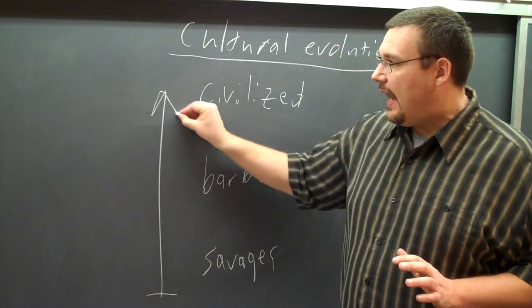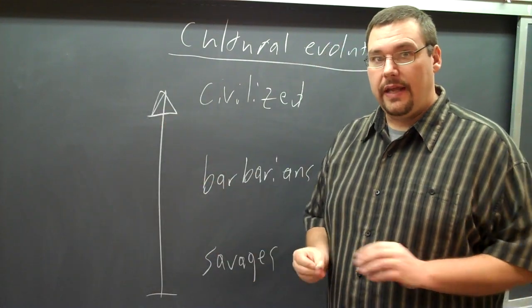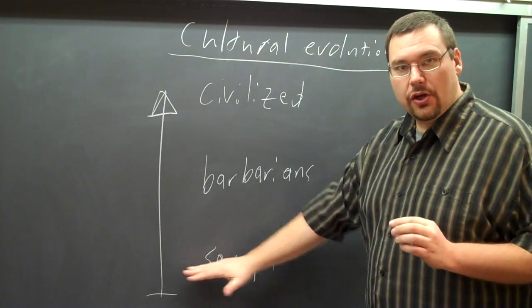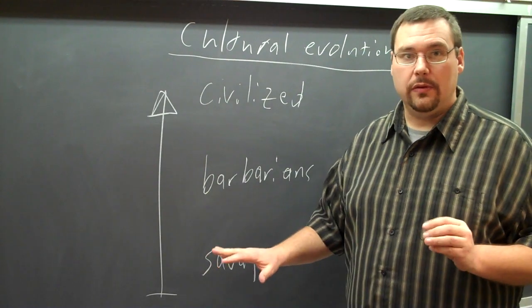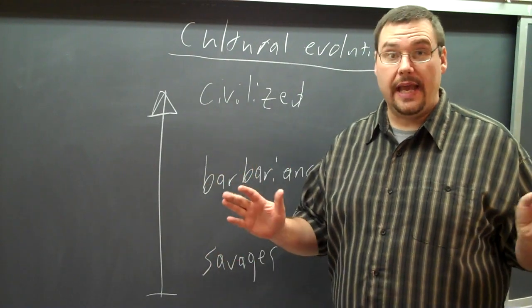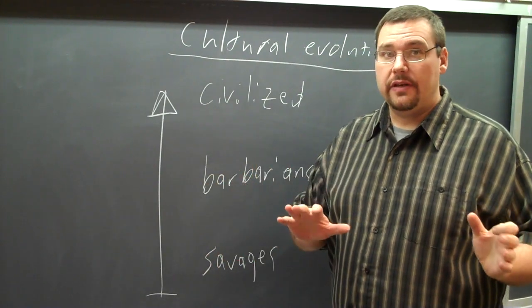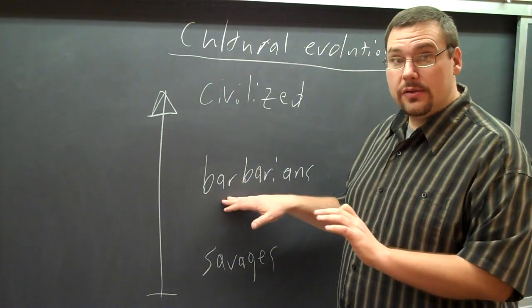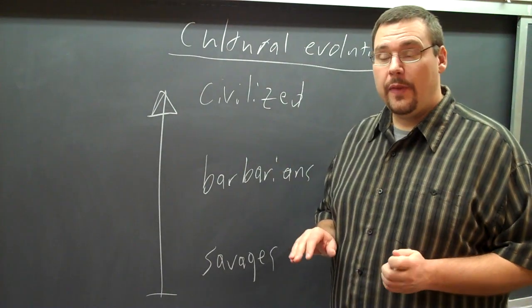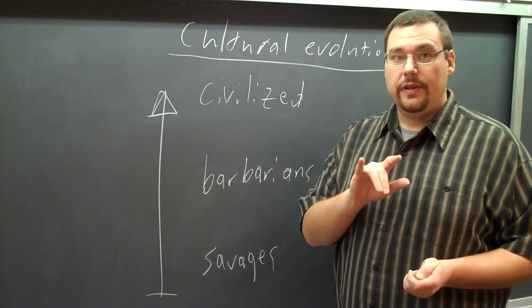It's a linear developmental model. The notion is everybody starts here, in the savage. And all groups of people started out prehistorically as savage. Some groups, given enough time, developed into barbarians. And then later on, some of these folks developed into the civilized people. Well, there are a couple of issues with this.